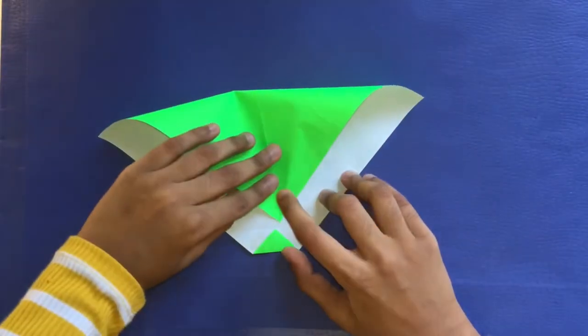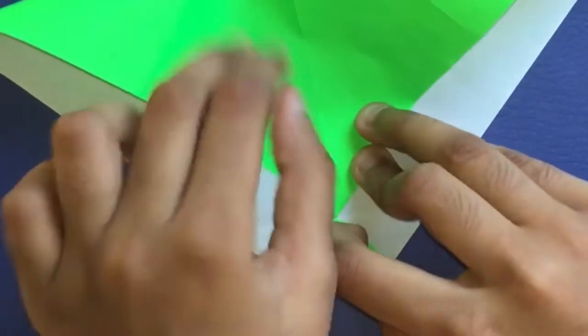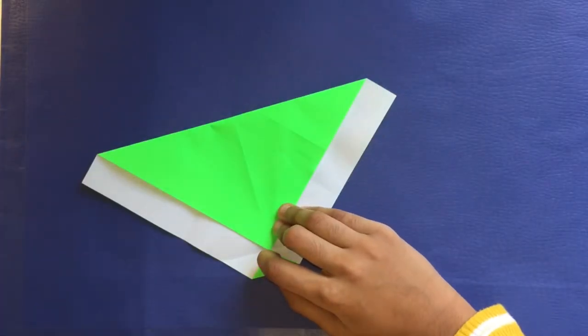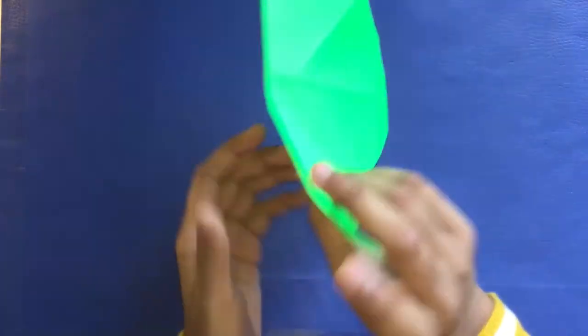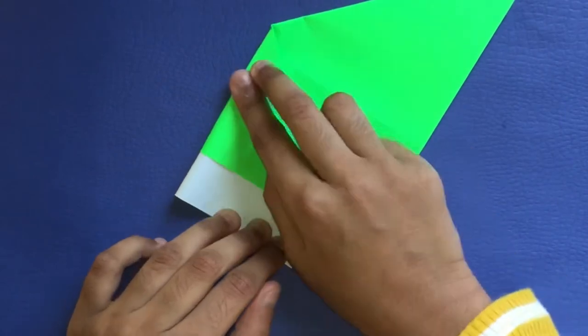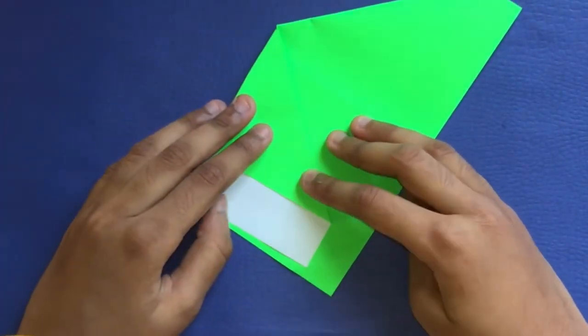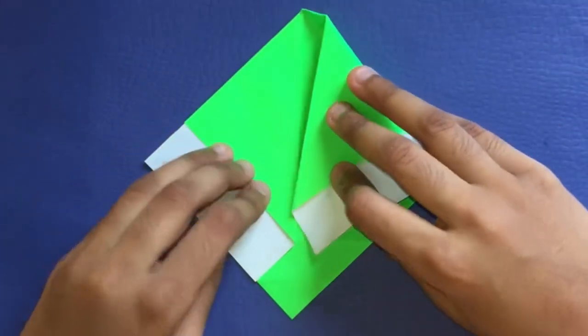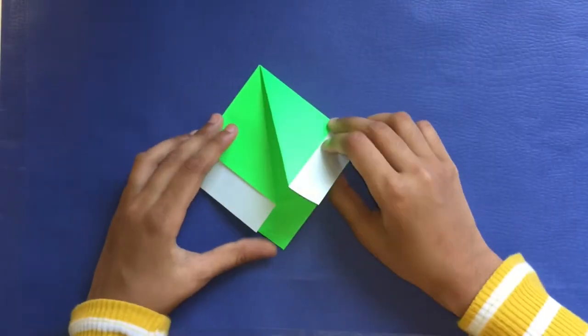Fold this down to this point. Now we're actually going to extend the crease. Let's turn it over, so if we just fold it down to this point, it should be aligning to this crease. Unfold.